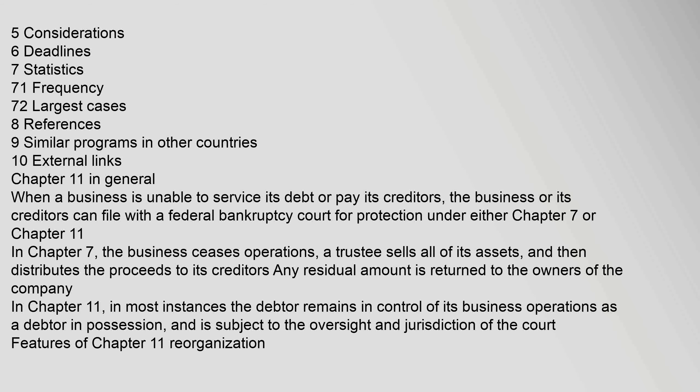When a business is unable to service its debt or pay its creditors, the business or its creditors can file with a federal bankruptcy court for protection under either Chapter 7 or Chapter 11. In Chapter 7, the business ceases operations, a trustee sells all of its assets, and then distributes the proceeds to its creditors. Any residual amount is returned to the owners of the company.